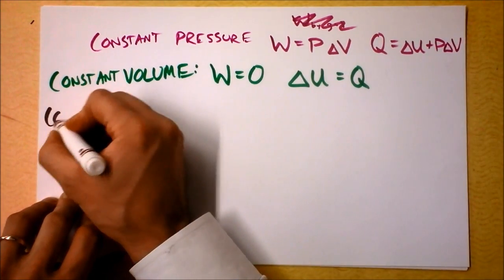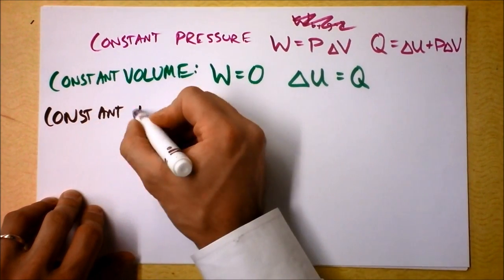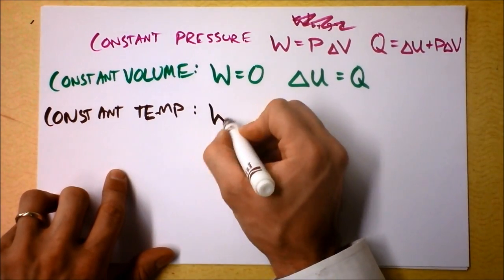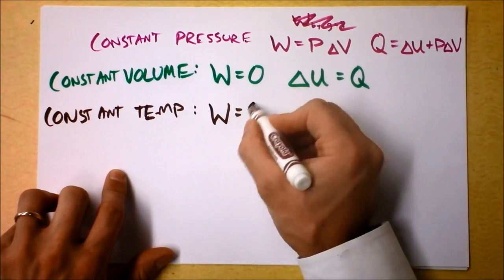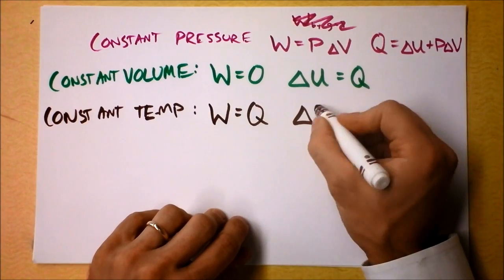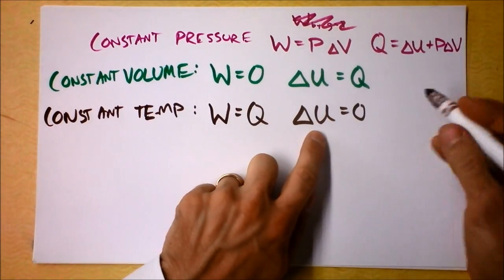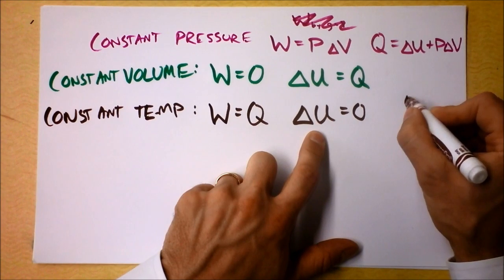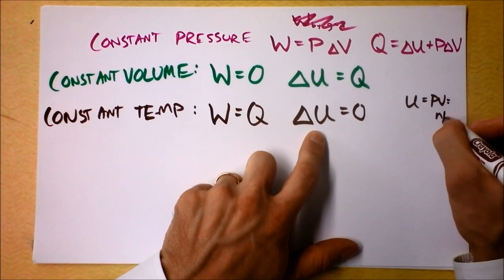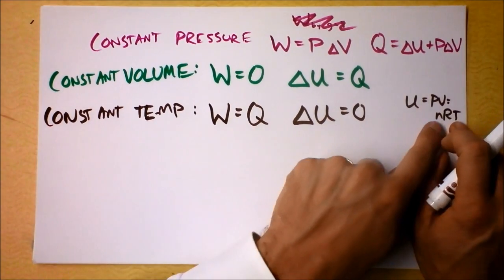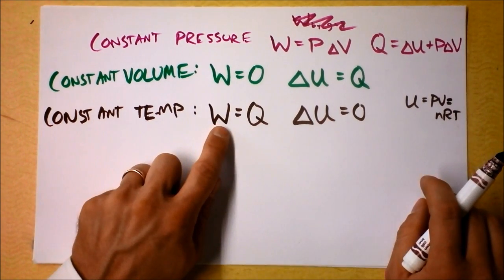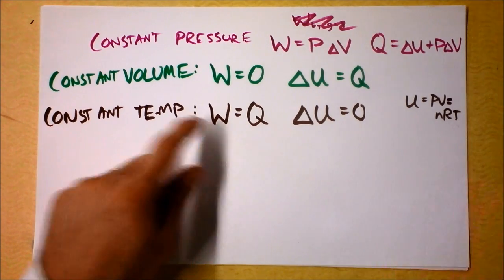And isothermal - that was constant temperature. In constant temperature situations, we've got that the work that the gas does has to be the heat that goes into the gas. Interesting. Because the gas is never changing energy. Because you remember the energy of the gas is PV, but it's also equal to nRT. And if the temperature is not changing, the amount of gas is not changing, then we can't have the energy change. So the only way the gas is going to be able to do some work is if you add heat to it.